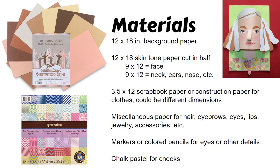These are the materials that you'll need. 12 by 18 inch background paper — you can see in my self-portrait in the upper right corner I used a bright green background paper. 12 by 18 skin tone paper cut in half, so you'll use half of it — 9 by 12 for the face, and the other 9 by 12 piece you'll cut up into different shapes and sizes to make the neck, ears, nose, etc. I have put a picture of multicultural construction paper on the slide, and I do buy this and use it in my classrooms because it's really cool that this is a resource available for us — paper that reflects all sorts of different skin tones.